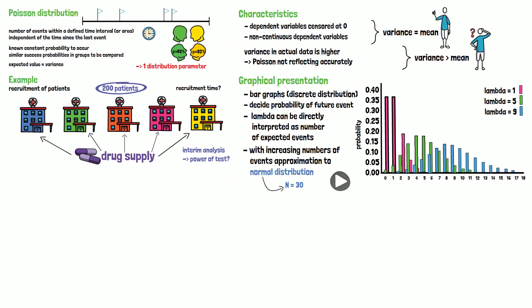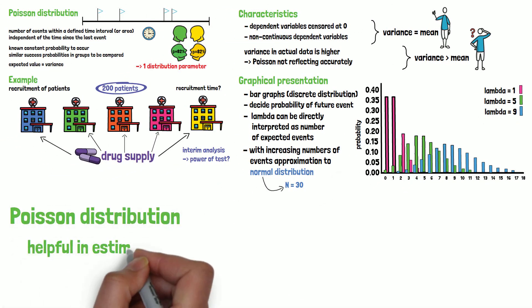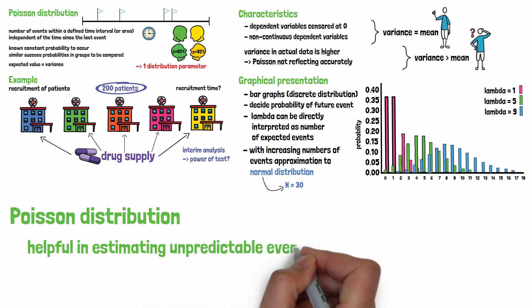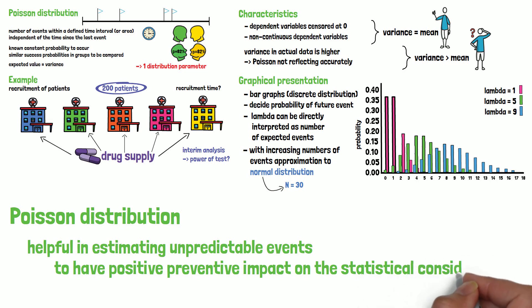So that is it for today. As you can see, the Poisson distribution can be very helpful in estimating unpredictable events, such as recruitment of patients in a certain time frame, in the planning phase of a clinical trial. This can have positive preventive impact on the statistical considerations and the logistical aspects of the study.